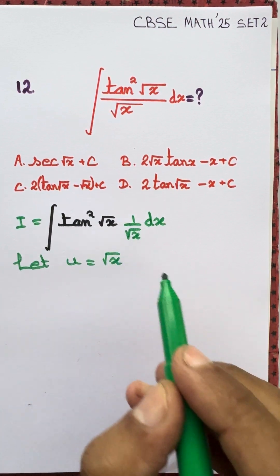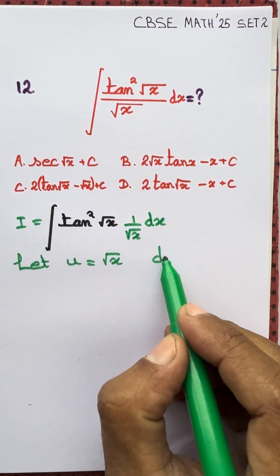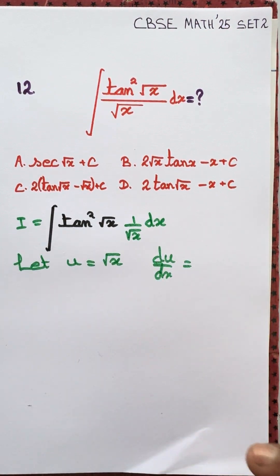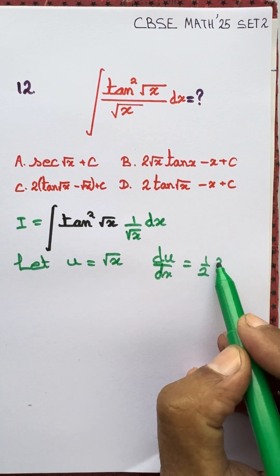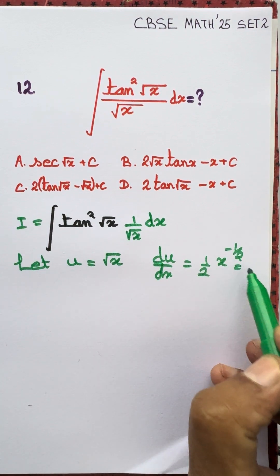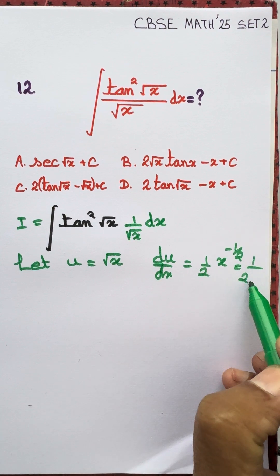We want to do it by substitution method and find du dx. Du dx equals the derivative of x to the power half, that's half x to the power half minus one. Half minus one is minus half, so that's equal to one by two root x.